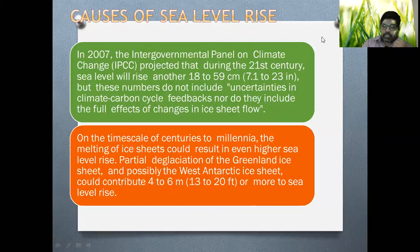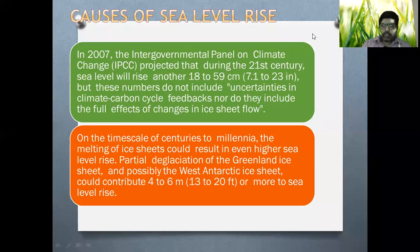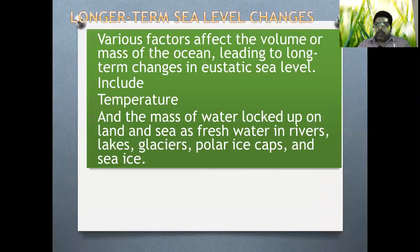On the time scale of centuries to millennia, the melting of ice sheets could result in even higher sea levels. We are not very sure of the exact proportion in terms of sea level rise, but it is definitely going to be affected by the rise of temperature throughout the planet. This will hamper living beings, plants, herbs, wildlife, and habitats of different endangered species. Since the whole world is connected from one area to another, it may have cascading effects.